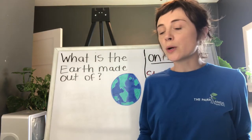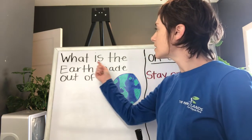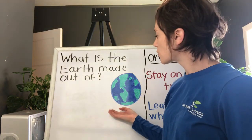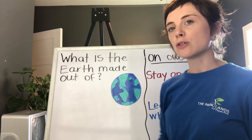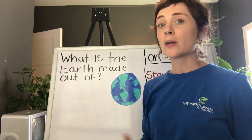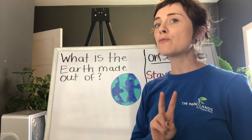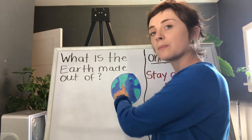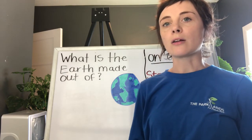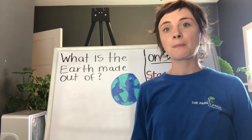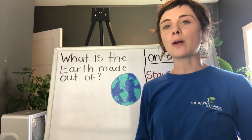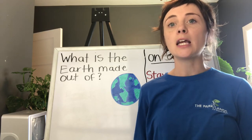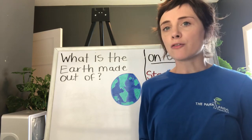The first question we're going to start with is: what is the earth made out of? I drew a picture of the earth — you'll notice two main colors, blue and green. The color blue represents water. So our first earth material that we're going to learn about today is water, and we're going to look for that on our hike.